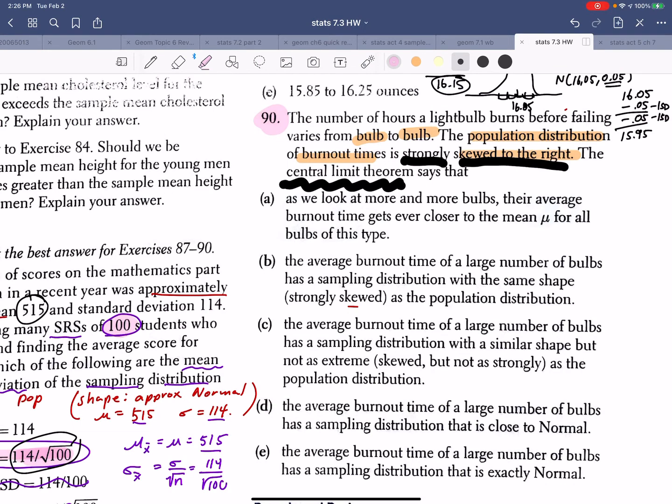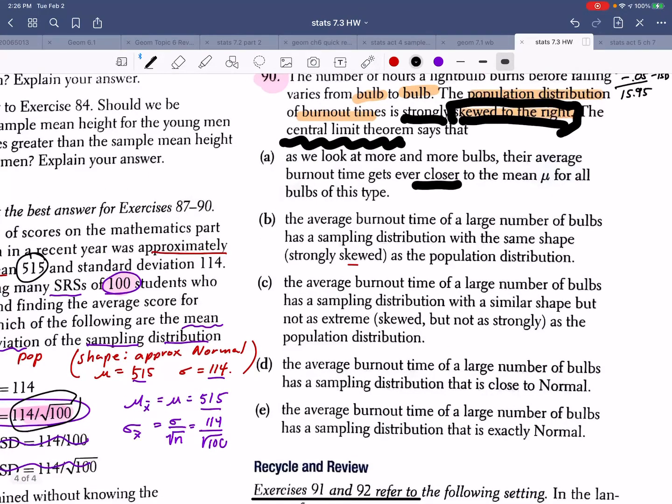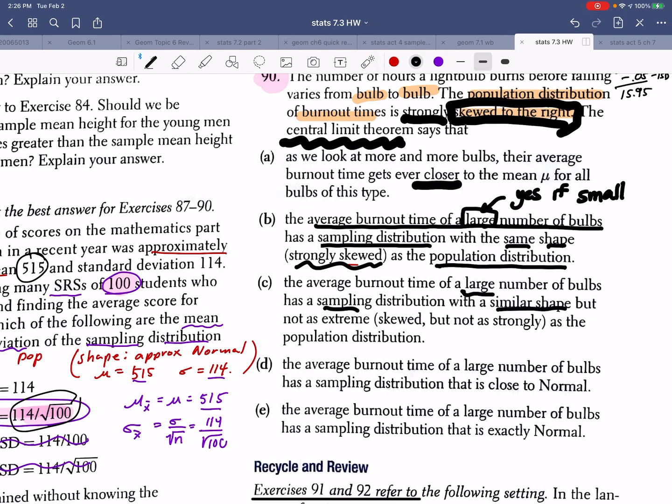It says, as we look at more and more bulbs, the average burnout gets closer to the mean for all bulb types. I'm not sure that's what we're trying to address. We're trying to address this skewed right business, right? The next one says, the average burnout time of a large number of bulls has a sampling distribution with the same shape strongly skewed as our population. That would be true, but I don't like this word large. This would be true if this was a small number of samples. So let's go to C. The average burnout time of a large number of bulbs has a sampling distribution with a similar shape but not as extreme. This would be true, but again, this would be better if they said smaller and medium number like we noticed.